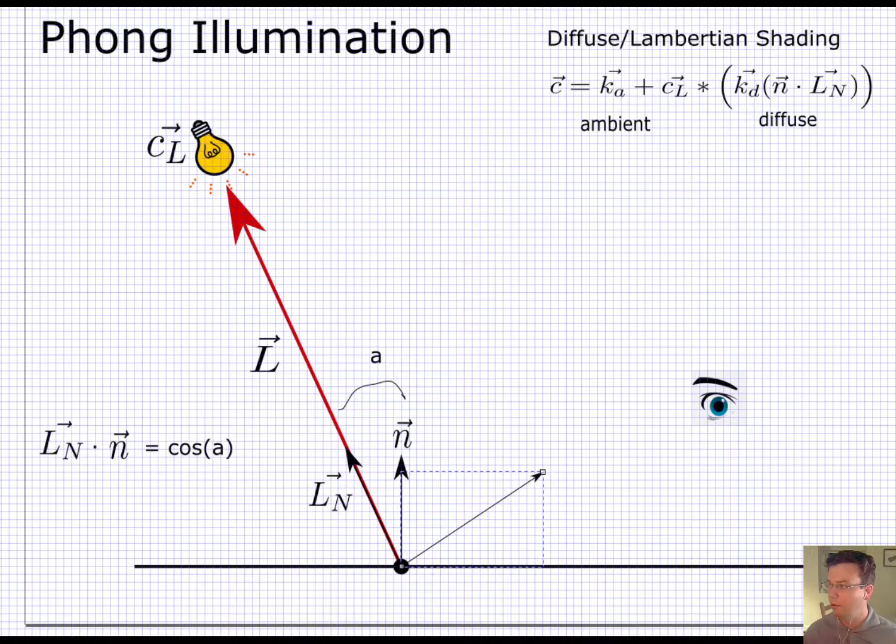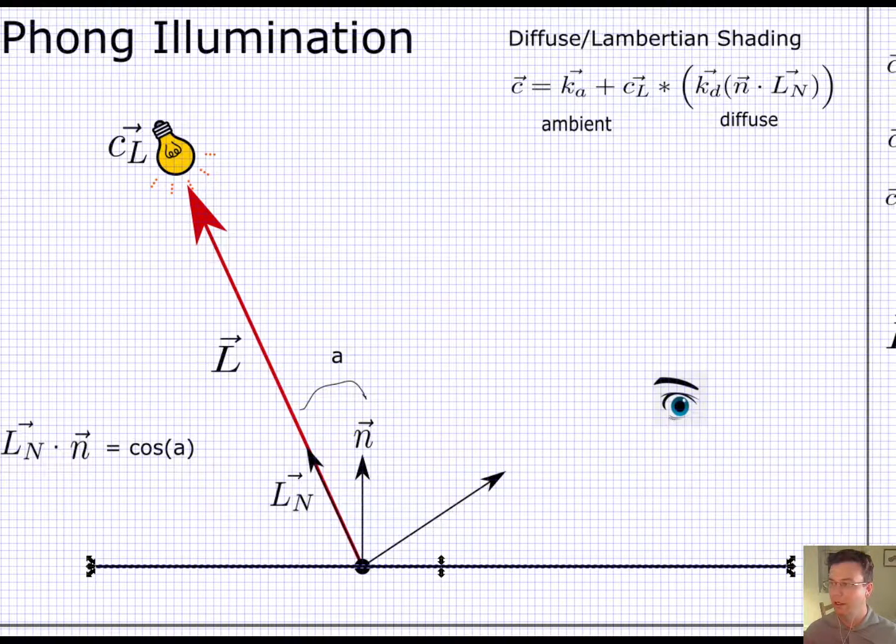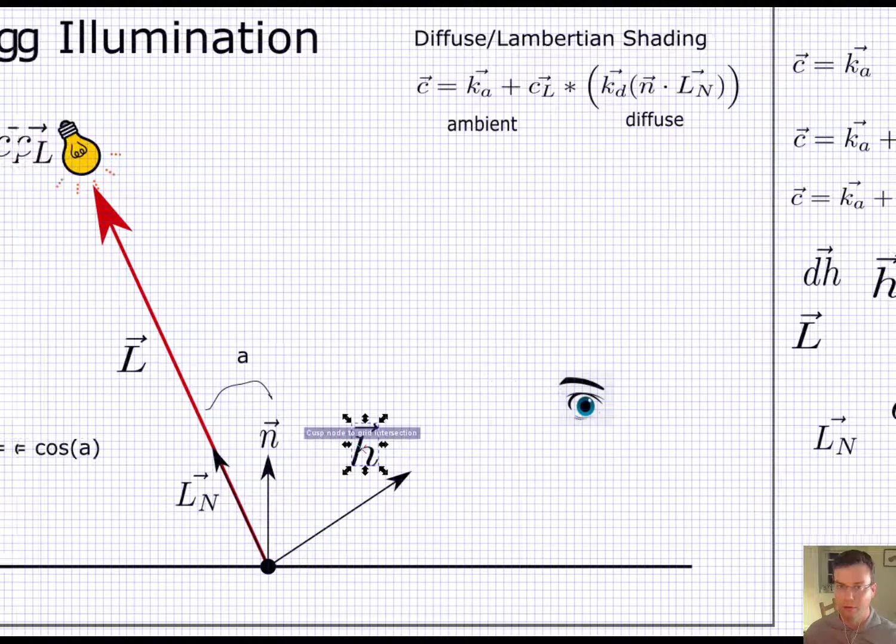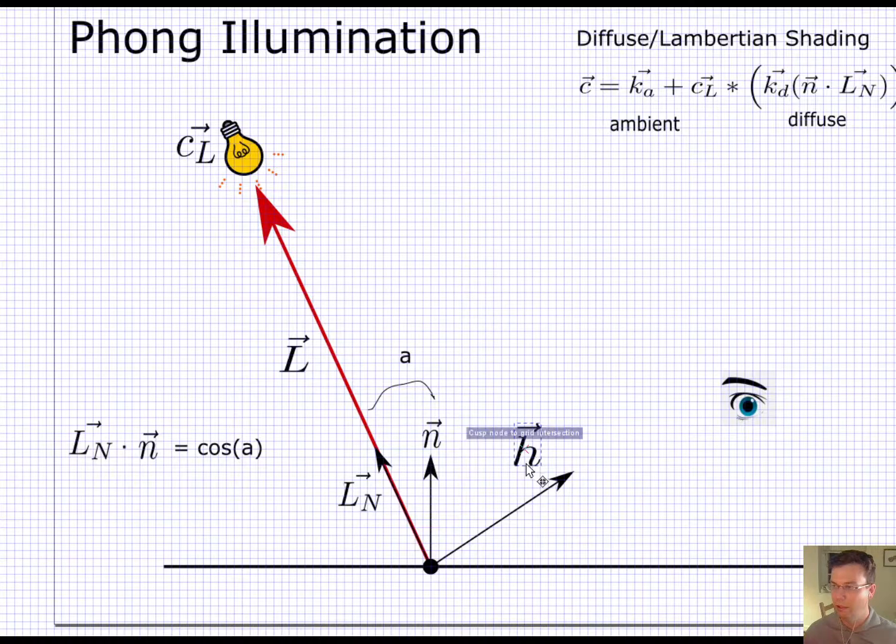So that's my vector h. So I'm going to make it a unit vector. So h is a unit vector in the direction from my intersection, so my position on the material, to the eye.